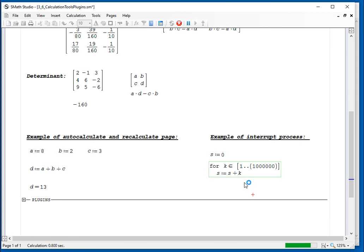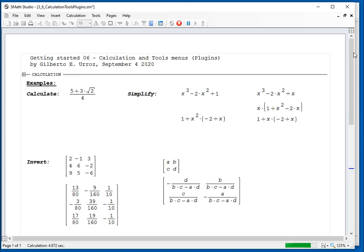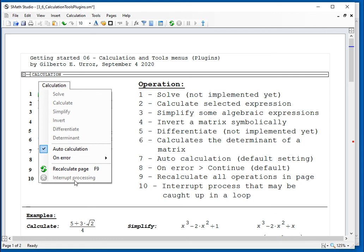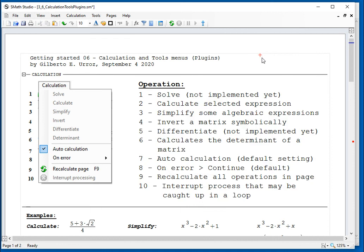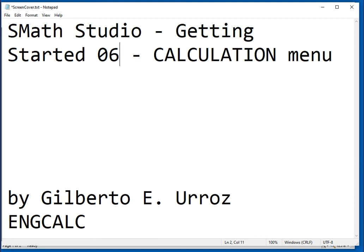But suppose that you get stuck in something and you want to interrupt, you can just go here, calculation, interrupt processing, and then ask if you want to interrupt, and say okay, and then I'm going to delete that. So I just wanted to use this expression to demonstrate the use of interrupting processing. And those 10 items are what you have available in the calculation menu. I hope you find this useful. And with this, we finish this particular video about the calculation menu in SMath Studio.